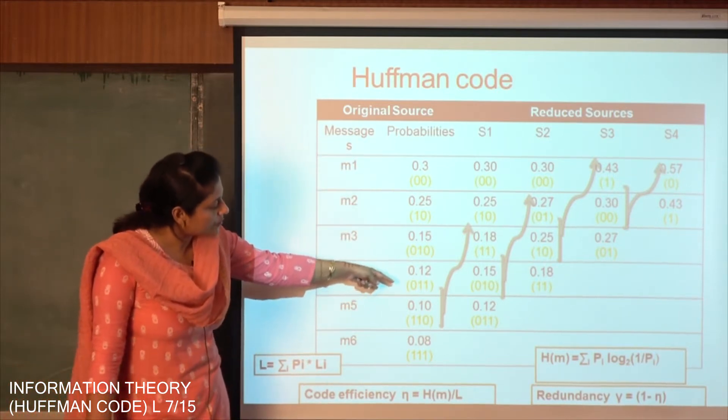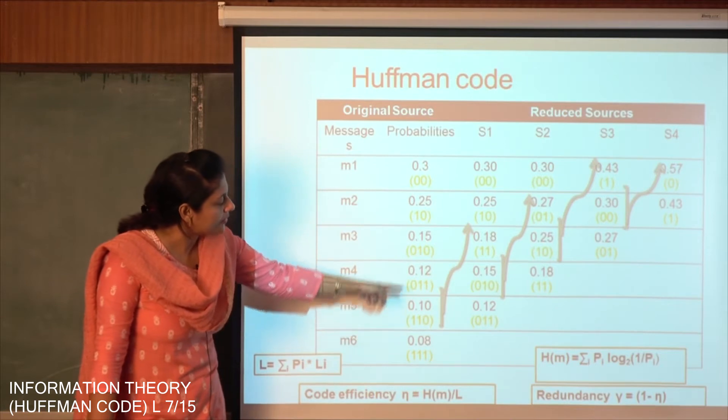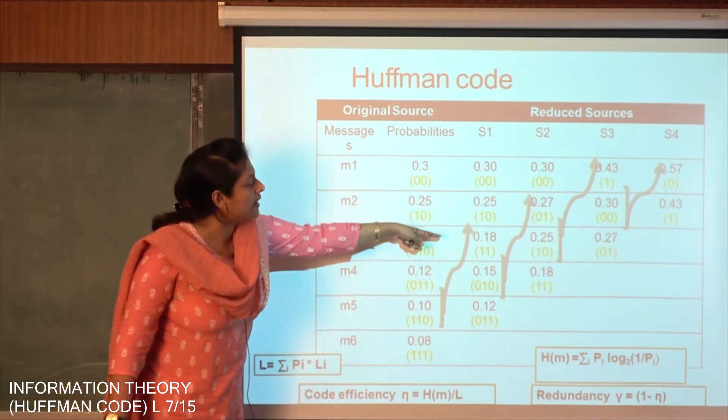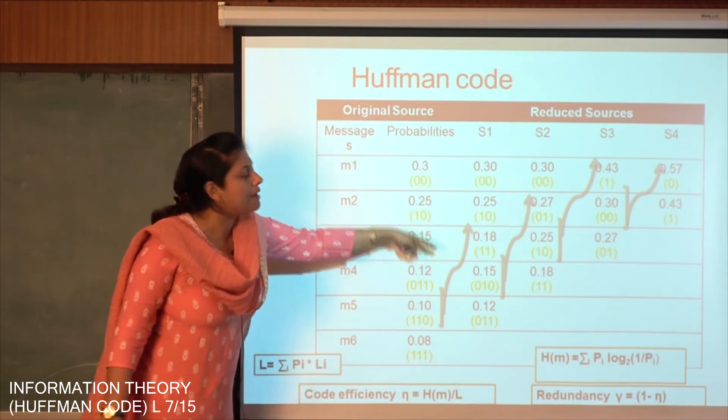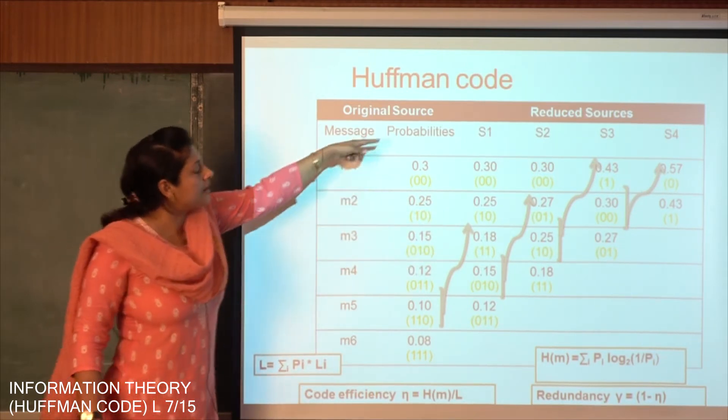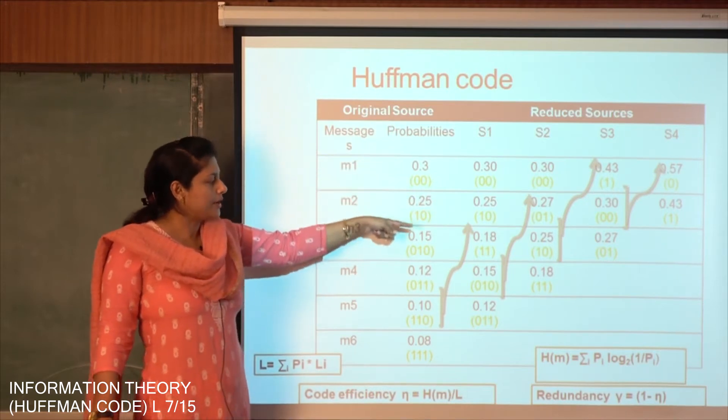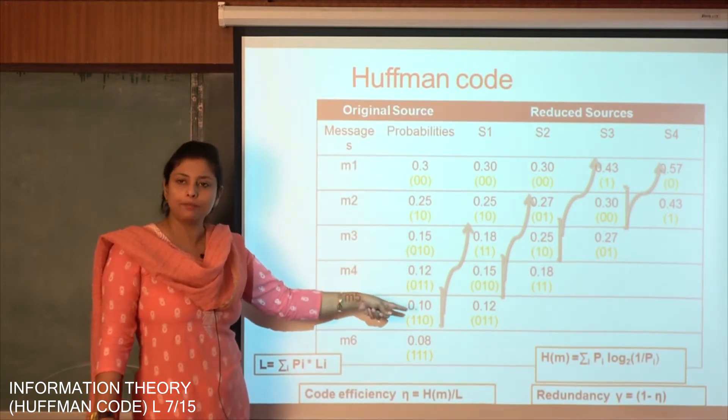See here 0.10 and 0.08 if you add them we get 0.18. So this 0.18 will rise up above 0.15. So we can rearrange them as 0.3, 0.25, 0.18, 0.15 and 0.12. Again we have to repeat it.